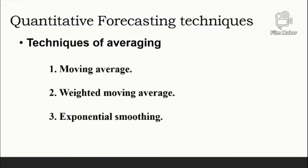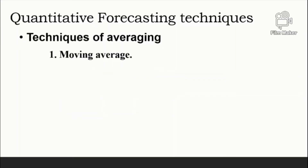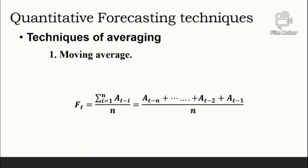One weakness of the naive method is that the forecast just traces the actual data with a lag of one period — it does not smooth at all. By expanding the amount of historical data a forecast is based on, this difficulty can be overcome. A moving average forecast uses a number of the most recent actual data values in generating a forecast.